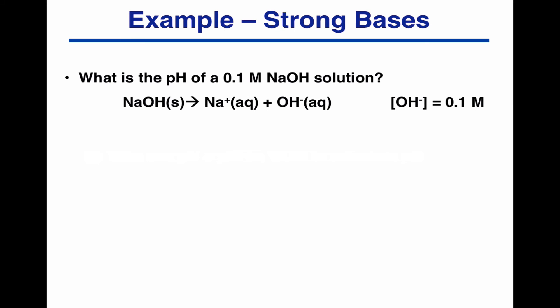So let's do a couple. So 0.1 molar NaOH solution. We know it's a strong base. 0.1 molar NaOH means hydroxide concentration is 0.1 molar. So if OH minus concentration is 0.1 molar, pOH equals minus log of 0.1, which is 1. pH plus pOH is equal to 14. So if the pOH is 1, then the pH must be 13.